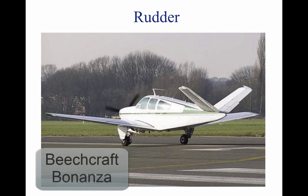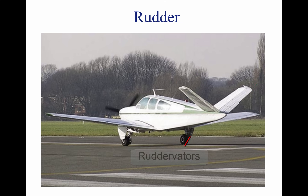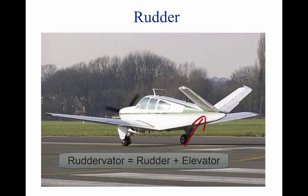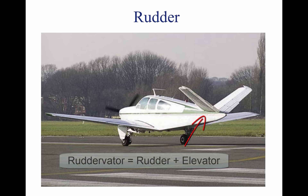The Beechcraft Bonanza shown above has a V-tail design. This design incorporates ruddervators, which are a combination of the rudder and the elevator, and they work much like flapperons. The pilot is able to control the rudder and elevator separately, but the control surface acts as both.